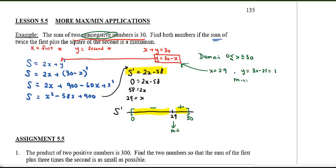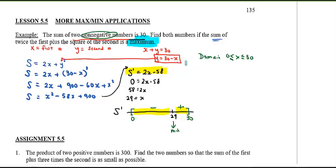But wait — I didn't ask for a minimum this time, I asked for the maximum! So where would the maximum be? We have a domain from 0 to 30. Note that x equals 29 gives a minimum, so we need to check the endpoints.